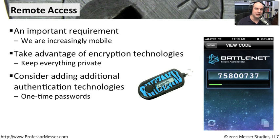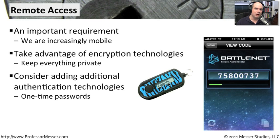These numbers are updating themselves every 30 seconds or every 60 seconds. So when your end server sees your username and password, it knows that must be you, because you happen to know the secret number that was showing up during that last 60-second period. That's just another method, another thing we can add to make sure that people from outside are really who we think they are.